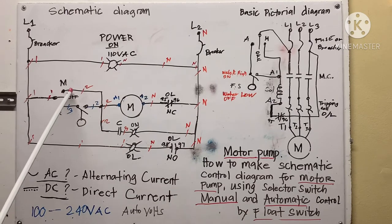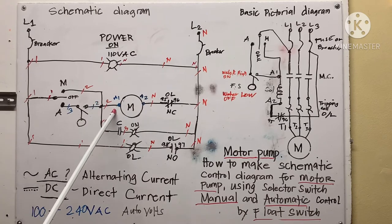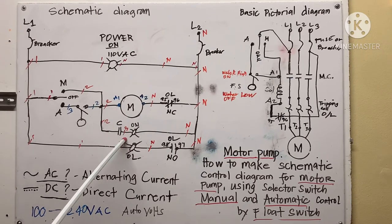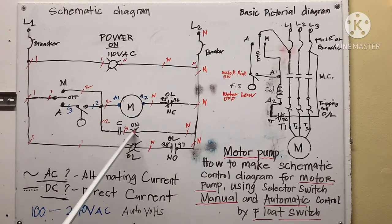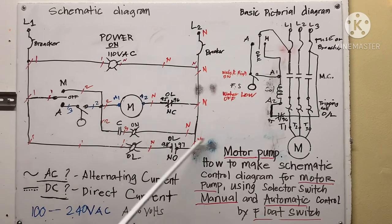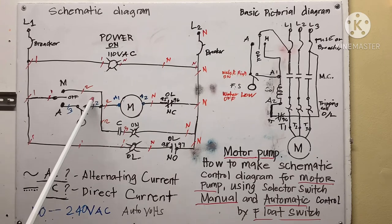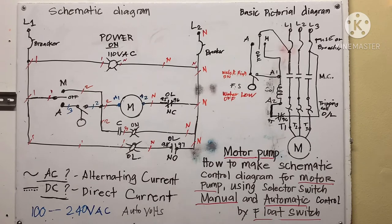Number two goes to A1 of the magnetic contactor, and also to the normally open contact of the magnetic contactor, going to the indicator light — so I put number two there as well. Number three is used for the next node. So we only use three numbers — one, two, and three — because all the neutral is already connected.